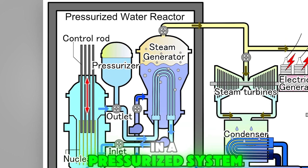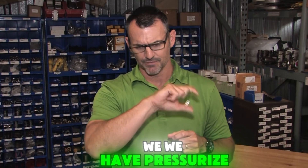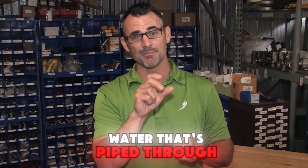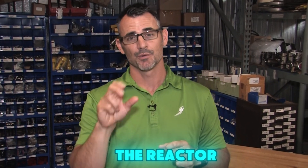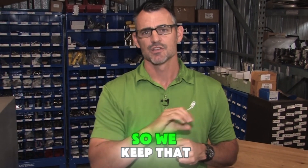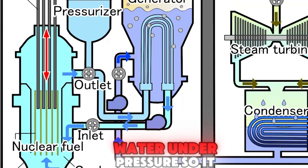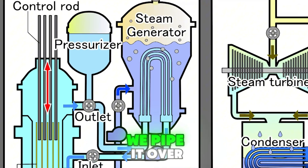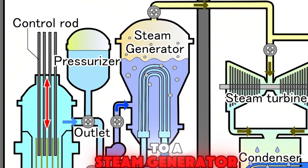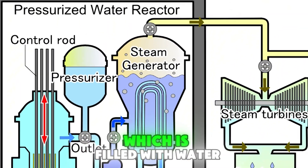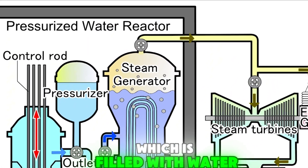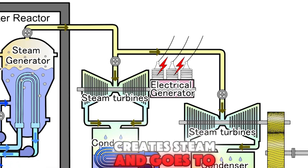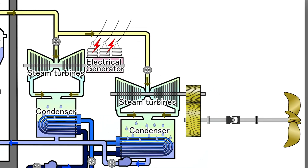In a pressurized system, we have pressurized water that's piped through the reactor. We keep that water under pressure so it doesn't boil. We pipe it over to a steam generator which is filled with water. It heats the water, creates steam, and that goes to a turbine.